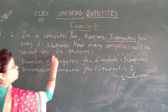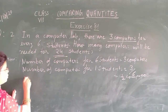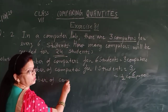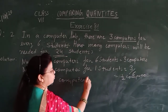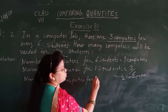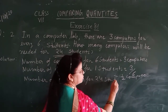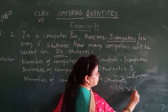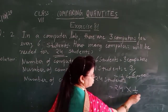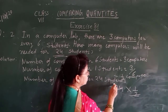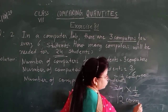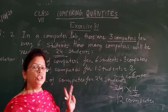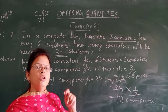How many computers for 24 students? Number of computers available for 24 students: 24 multiply 1 by 2. Cancel 2 and 24, so how many computers are available for 24 students? That means 2 students sharing 1 computer.